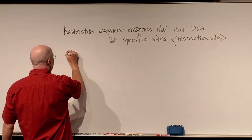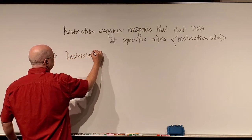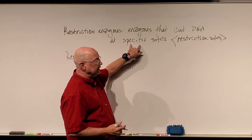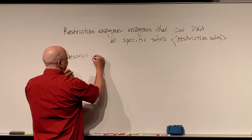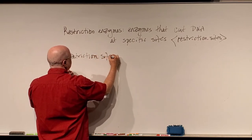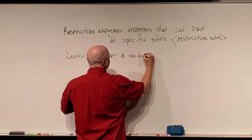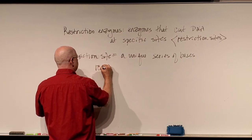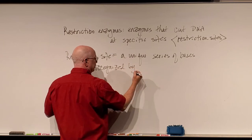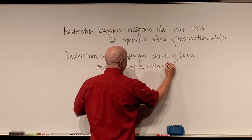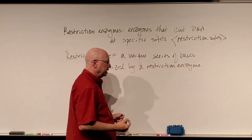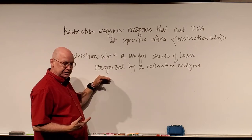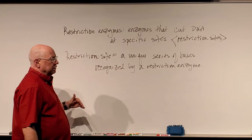A restriction site — to be restricted means to be limited. Restriction enzymes cut DNA at specific or limited locations. A restriction site is a unique or specific series of bases recognized and cut by a restriction enzyme. DNA restriction enzymes recognize a series of bases — in DNA, the bases are adenine, thymine, guanine, and cytosine: A, T, G, and C.